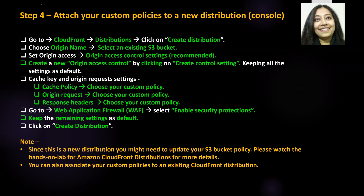Step four: we will attach our custom policies to a new distribution. You can also associate them to an existing distribution if needed, but for this lab I'm going to create a new distribution. Go to CloudFront distributions, click on create distribution, select an existing S3 bucket — or create a new one if needed. Then set the origin access to origin access control settings (recommended) and create a new origin access control setting.